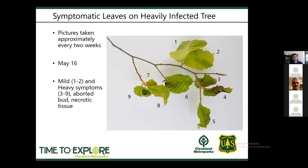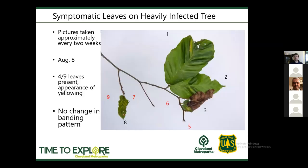On May 16th, one tree showed nine leaves present — leaves one and two mild, leaves three through nine heavily symptomatic: very curled, different color and texture, with necrotic tissue. There was also an aborted bud that failed to develop leaves throughout the entire season. By mid-season on August 8th, five leaves had fallen off — only four of the original nine remaining. There was more necrotic tissue developing, and all heavily symptomatic leaves fell off early.